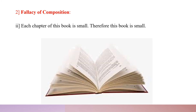Now let us take the second example. Each chapter of this book is small; therefore, this book is small. If we argue in this manner, then we commit the Fallacy of Composition. In this example, it is wrongly argued that what is true of each chapter as the part of the book — that is, singly it is small — is said to be true of the whole book.